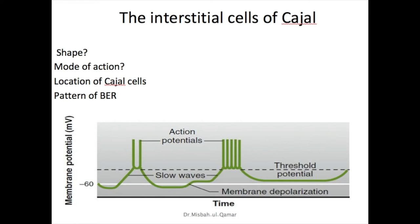In the stomach and small intestine there is a descending gradient in pacemaker frequency, where the pacemaker with the highest frequency dominates. This basic electrical rhythm is significant because it coordinates peristaltic and other motor activity. For example, after vagotomy or transaction of the stomach wall, peristalsis in the stomach becomes irregular and chaotic.